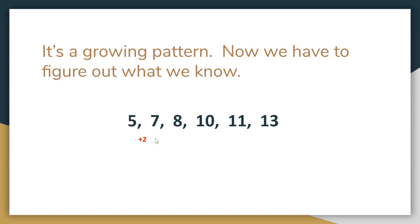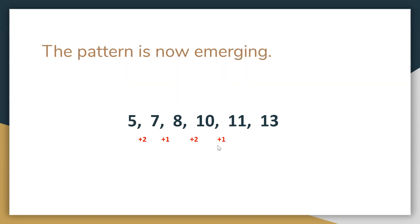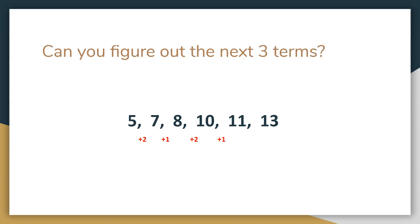We know 5 to 7 is plus 2, and then from 7 to 8, that's plus 1. So then we look between 8 and 10 — again it's plus 2. And between 10 and 11, we notice it's plus 1. So this is a growing pattern, but not in a typical way: plus 2, then plus 1. This pattern has now emerged — can you figure out what the next three terms are going to be? Pause the video, write down your answers, and check in when you're ready to continue.